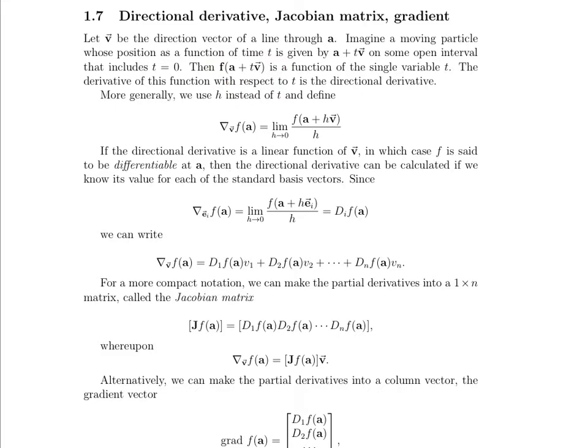We know the point where we begin, a; we know the direction we're moving in; t is what we normally call a parameter, deciding how far along we're sliding out that vector v, on some open interval that includes t equals 0. Since h is normally the limit-taking variable in derivatives, let's switch t out and put h. The directional derivative is the limit as h goes to 0 of f of a plus hv minus f of a, all divided by h. Note there was a typo in the original document which has since been corrected.